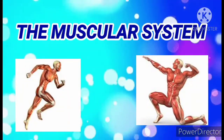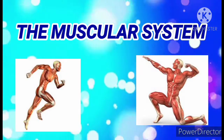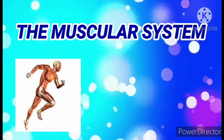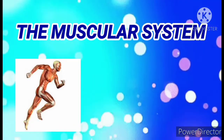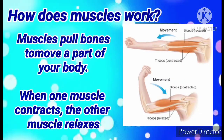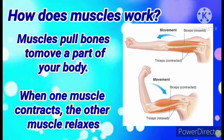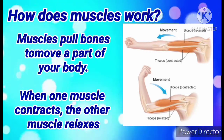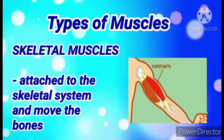Another system of our body is called the muscular system. Your muscles are the motors of your body — they produce forces that move your body around. Muscles pull the bones to move a part of the body. When one muscle contracts, the other relaxes, just like when you bend your arm.